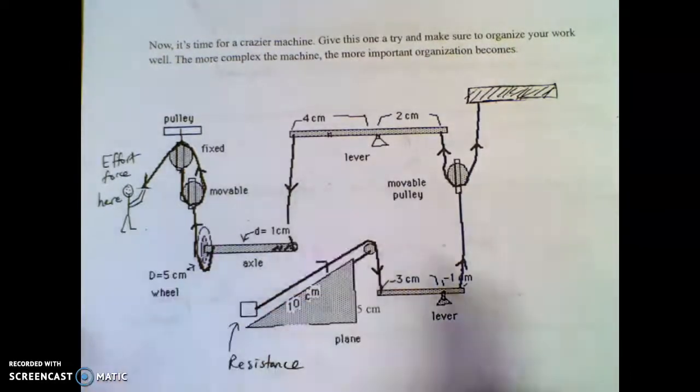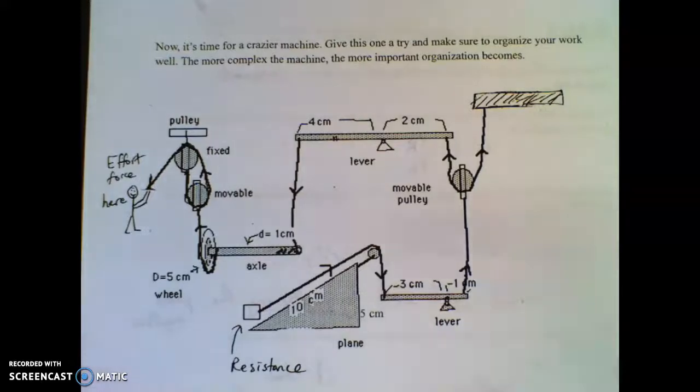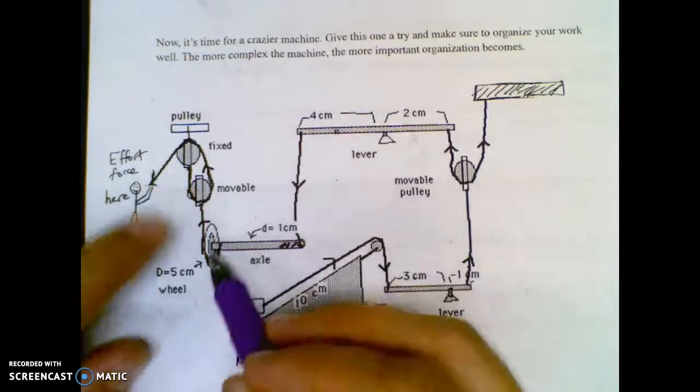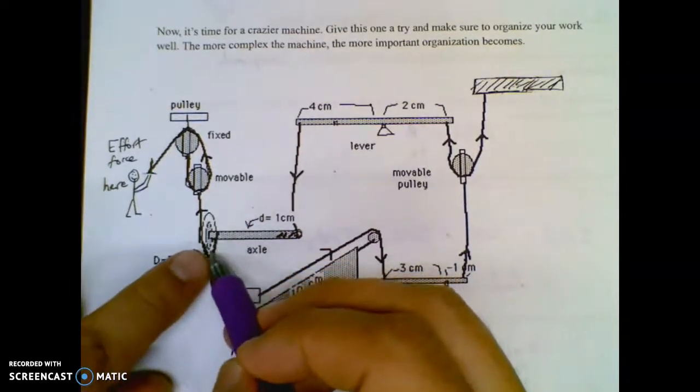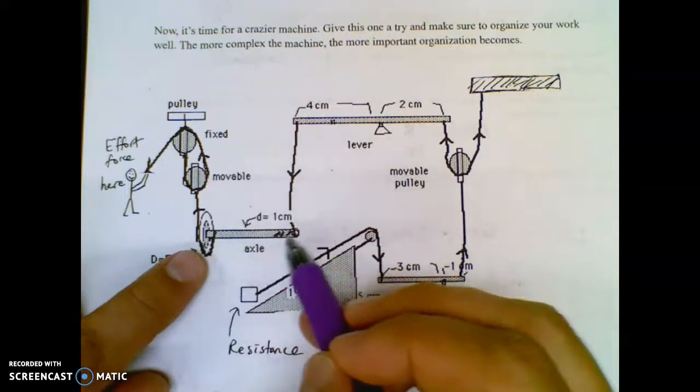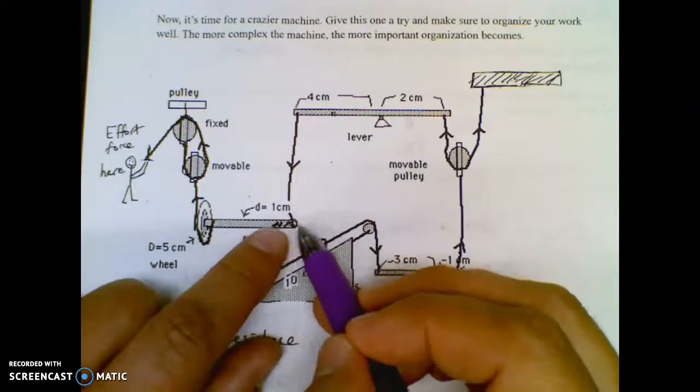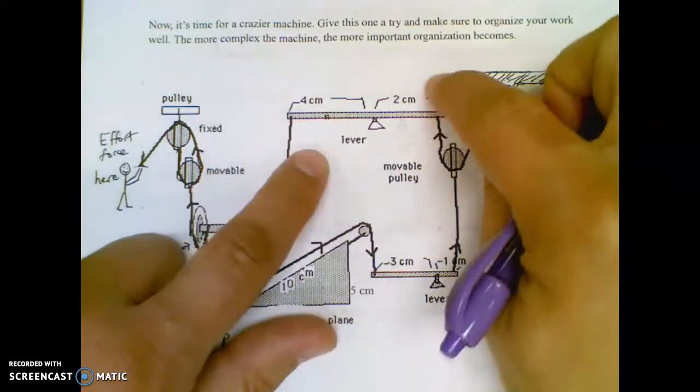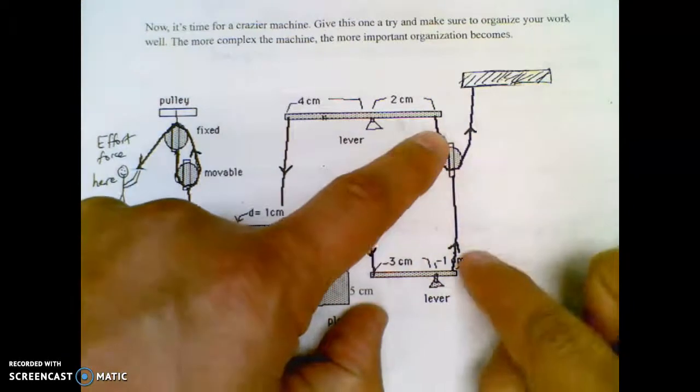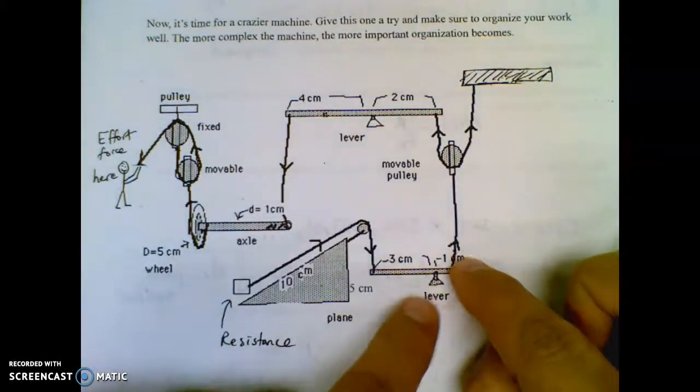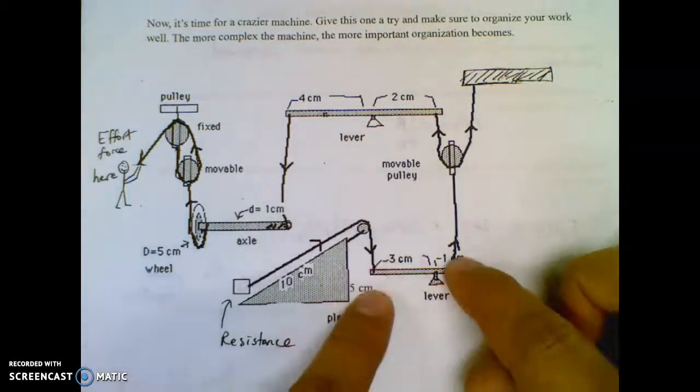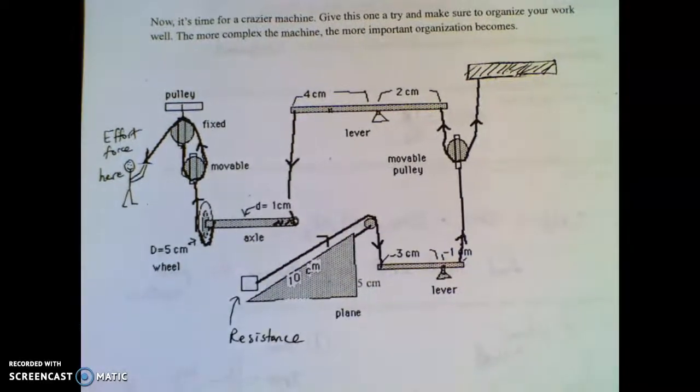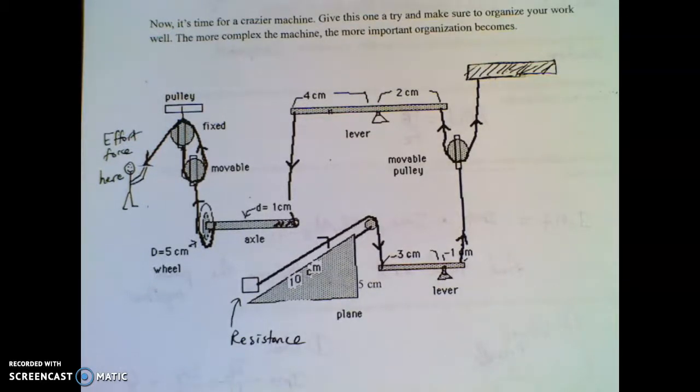So you're going to pull on this. Here's the breakdown of what happens. I'm going to pull down on this string, it's going to pull on this movable pulley, it's going to pull on this string to spin the big wheel, which will spin the axle, which will wrap some of the string on it and pull down on that lever, which will pull up on this lever, which will pull up on this pulley, which will pull up on this string, which will pull up on that lever, which will pull down on that lever, which will pull up on the string and move the box. Holy cow, Rube Goldberg, right? But it breaks down pretty easily.